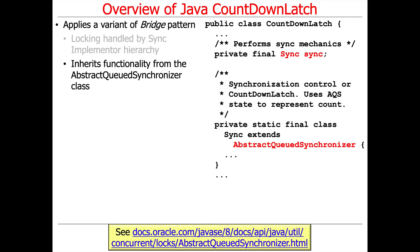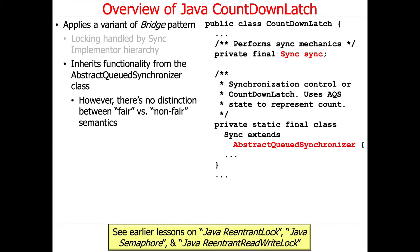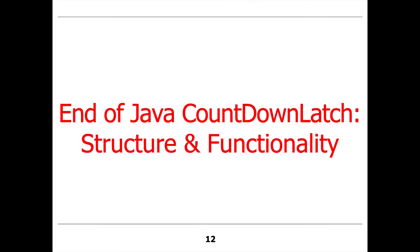As always, it inherits functionality from the AbstractQueuedSynchronizer class. However, in the CountDownLatch, there's no distinction made between fair versus non-fair semantics. The AbstractQueuedSynchronizer is used to represent the count instead.